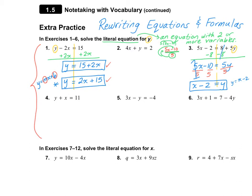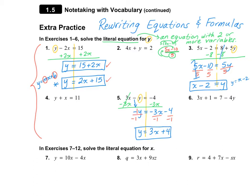Let's take a look at number 5. I'm going to draw my line and circle my variable. I have to move my 3X over by subtracting it. These two terms on the right are not like terms, so we're going to keep them separate. Notice there's still a negative in front of the Y — that's like an invisible negative 1 — so I divide by negative 1, distributing it to both parts. My answer is Y equals positive 3X plus 4, which is already in Y equals MX plus B form.